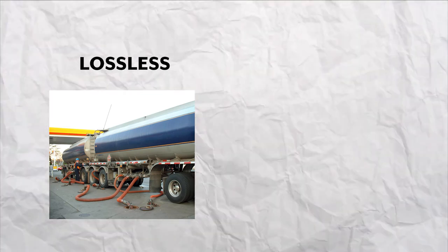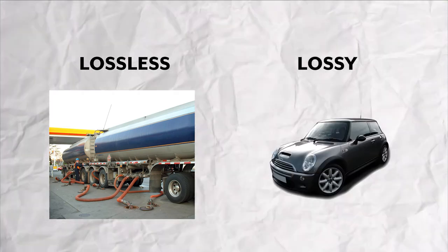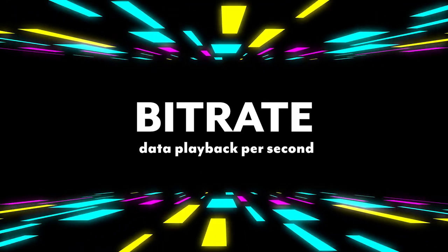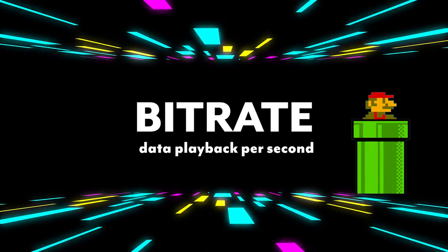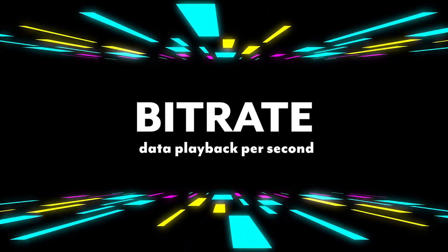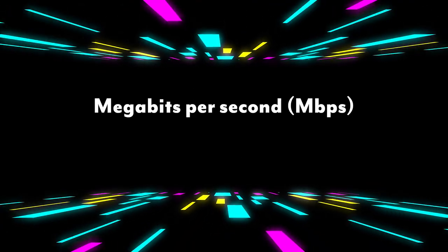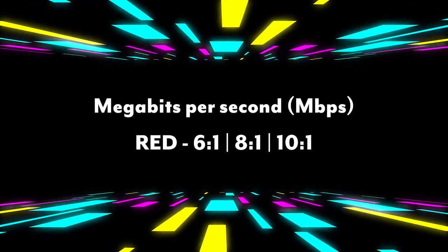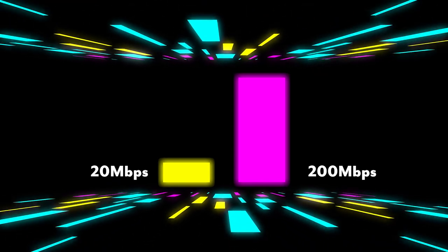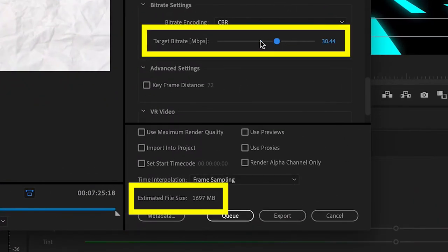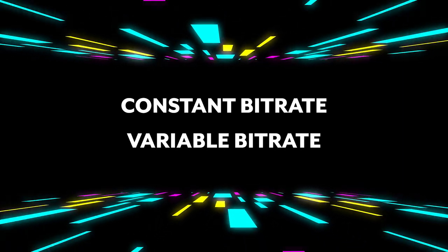Just remember: lossless means bigger files that save more information, and lossy means smaller files that save only what it needs. Codecs have a few settings you need to pay attention to. The first one is bitrate — how much data is being played back per second. How big is the pipeline? This is calculated by most camera makers and NLEs as megabits per second. RED uses a ratio system: 6 to 1, 8 to 1, 10 to 1 — but for our purposes we'll stick with megabits per second. The higher the bitrate, the more information it can transmit. Bitrate is one of the key factors when you are exporting to keep your file sizes down if you're worried about space or uploading files to the cloud. This can be a constant rate or variable.